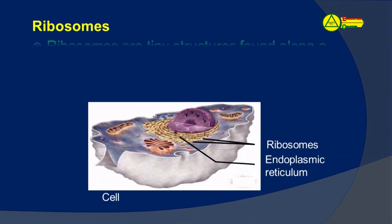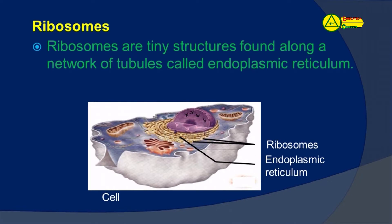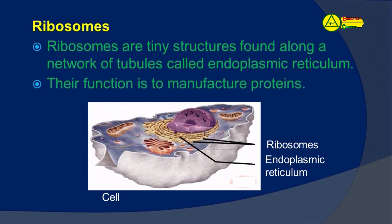Ribosomes are tiny structures found along narrow tubes called the endoplasmic reticulum. Their function is to manufacture proteins.